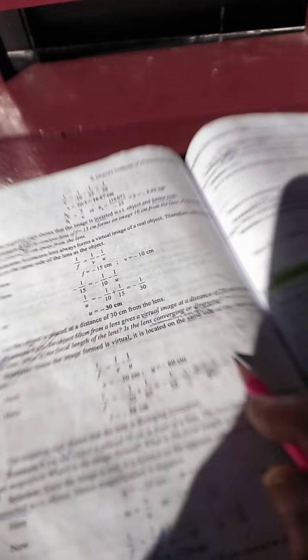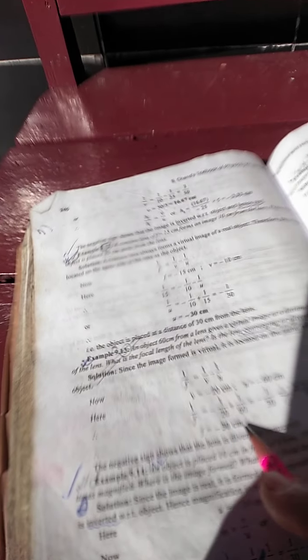The LCM is 60. Then you do (-3 + 1)/60 = -2/60 = -1/30. So ultimately it comes to 1/f = -1/30, therefore f = -30 centimeters.